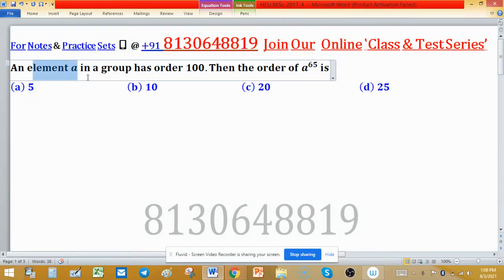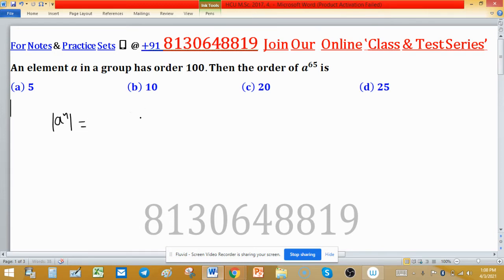An element a in a group has order 100. Then the order of a raised to the power 65 is: Whatever the power of an element, suppose power n, then order of this element you can find by the formula: order of a divided by GCD of exponent or power for which asked with order a, GCD of n comma order a.